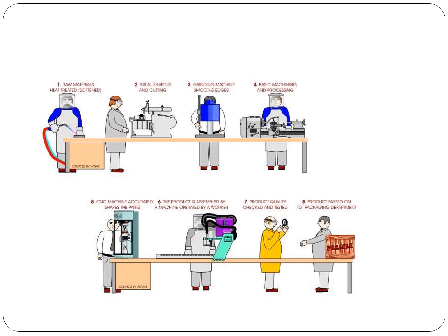In batch production, the product is assembled by a machine and operated by a worker. The product is checked for quality, then tested and passed to the packaging department.